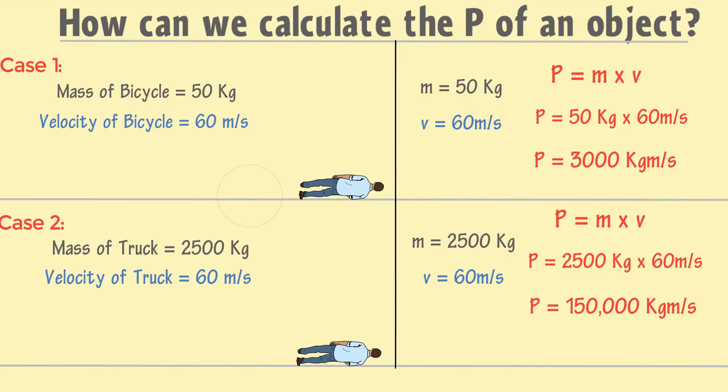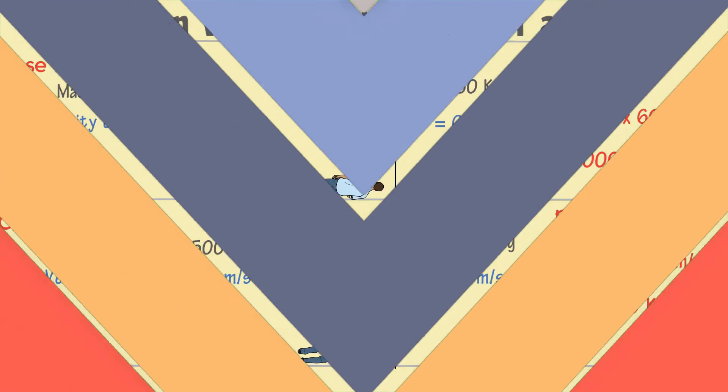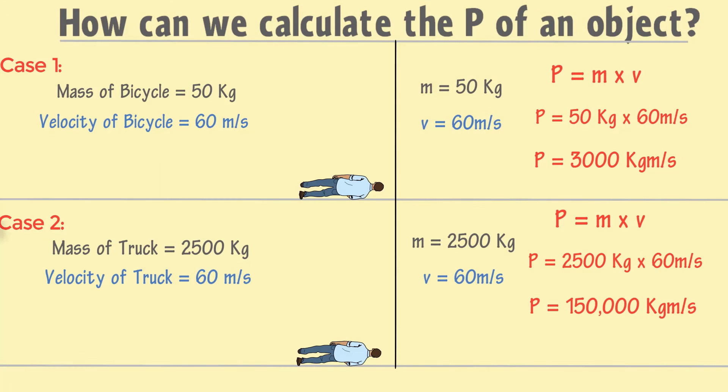This shows that the momentum of a bicycle is smaller than that of the truck. Therefore, a person is merely injured in case 1 when hit by the bicycle, while in case 2, the person got serious injuries or death when hit by the truck.